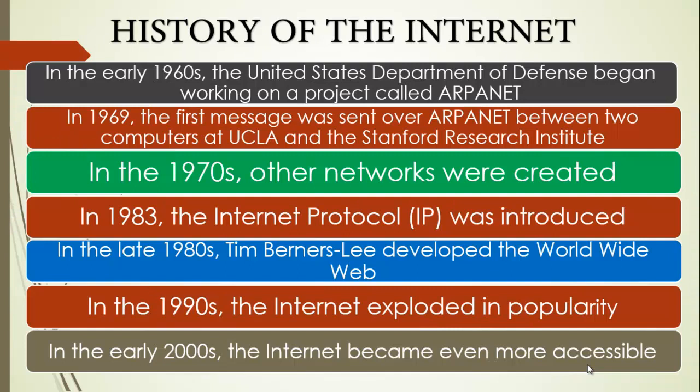We now move to the history of the Internet. The Internet has become an integral part of our modern life, but there is a need to know its history so we can appreciate where we are coming from. The Internet is a global network of computers and devices that communicate using standard protocols. Research on the Internet began in the early 1960s with the United States Department of Defense, which began a project called ARPANET. The goal of ARPANET was to create a decentralized communication network that could survive a nuclear attack. In 1969, the first message was sent over ARPANET between two computers at UCLA and the Stanford Research Institute — this was the beginning of the Internet as we know it.